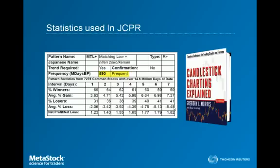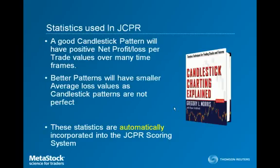Frequency: based on the research conducted, this pattern happens every 590 bars, which would be considered a frequent pattern. The pattern frequency ranges from very frequent to extremely rare. We've also got statistics for a seven-day hold time — in other words, if we bought the pattern and held for one bar, two bars, three bars, four bars, all the way up to seven bars. It covers the percent winners, the average percent gain, percent losers, average percent loss, and the net profit versus net loss. A good candle pattern will have positive net profit/loss over many trade values and time frames. Better patterns will have similar or smaller average loss values, as candlestick patterns are not perfect. All of these statistics are automatically incorporated into the JCPR scoring system.